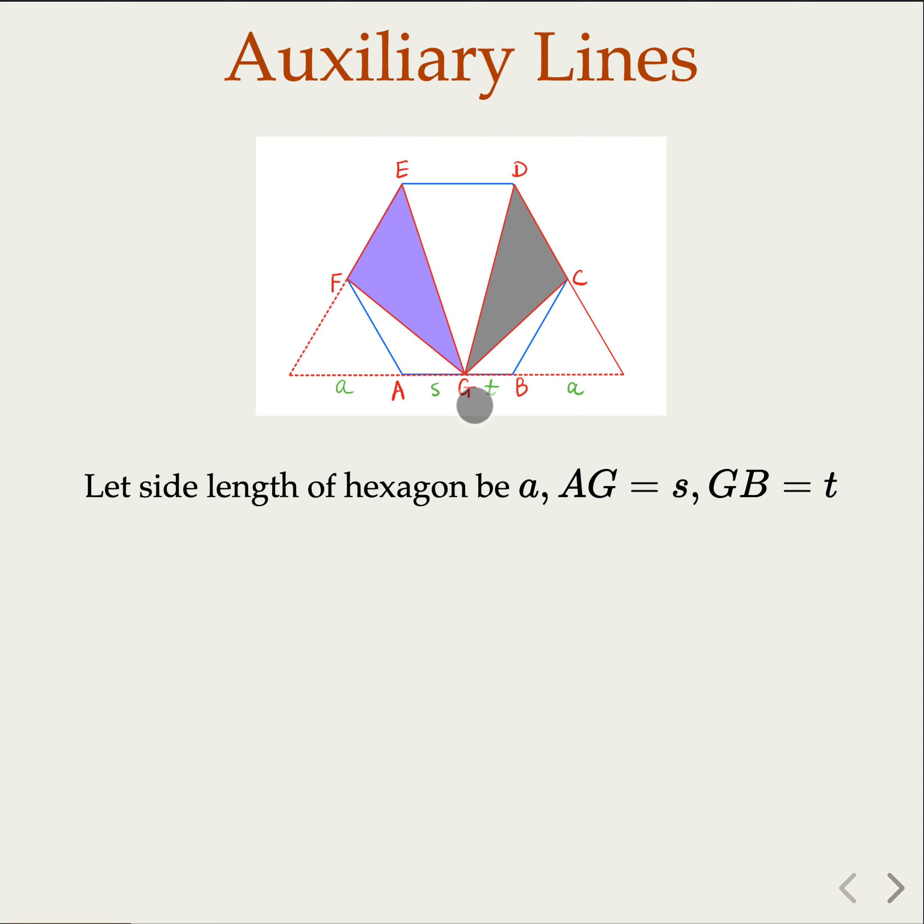So if the side length of this hexagon is A, we claim that this segment is also A. So if S is the length of AG, T, G, B, then we know that S plus T is equal to A. So all the line segments equal to A here. And we try to find the ratio here, let's call it X. So X is the quantity we try to find, which is the ratio of S over T.